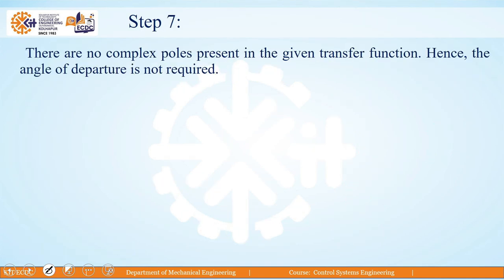The next step considers the angle of departure or angle of arrival. This concept applies only when complex poles or complex zeros are present. Since this example has no complex poles or zeros, there is no need to find the angle of departure or arrival.